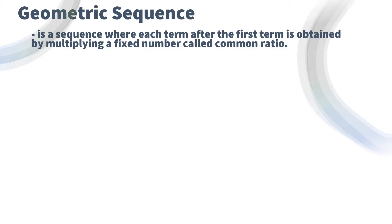To do that, we're going to make a general geometric sequence. We can have a sub 1 as our first term. Then to get the next term, by definition of geometric sequence, we're going to multiply the common ratio to our first term. So that will give us a sub 1 times r, which is our second term.